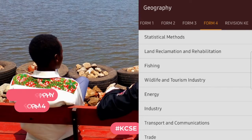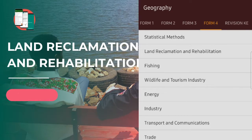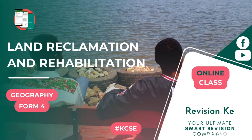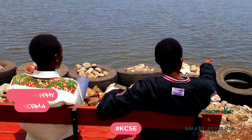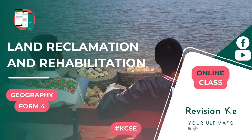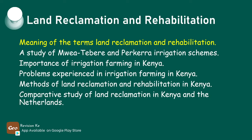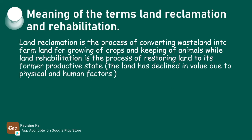Land reclamation is our next topic and we are going to define what land reclamation is and what land rehabilitation is. Land reclamation is a process of converting wasteland into farmland by foregrowing of crops and keeping of animals, while land rehabilitation is a process of restoring land to its former productive state.